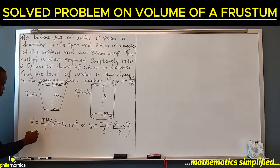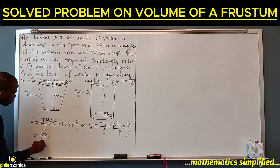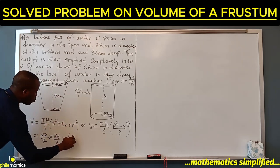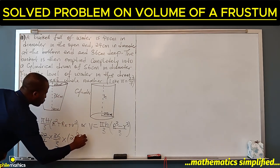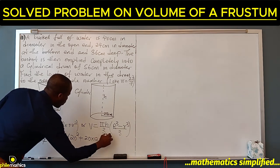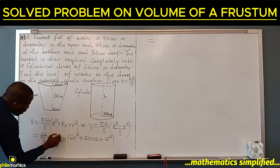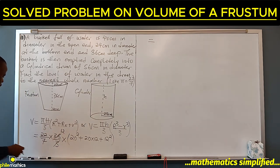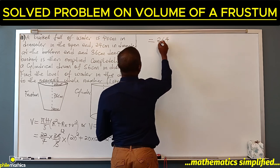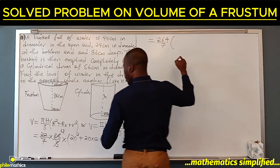So we'll have 22/7 times 36 divided by 3, times (20² + 20×12 + 12²). The 3 can cancel 36 as 12, so 22 times 12 gives us 264/7. Inside the bracket we'll have 400 plus 240 plus 144.